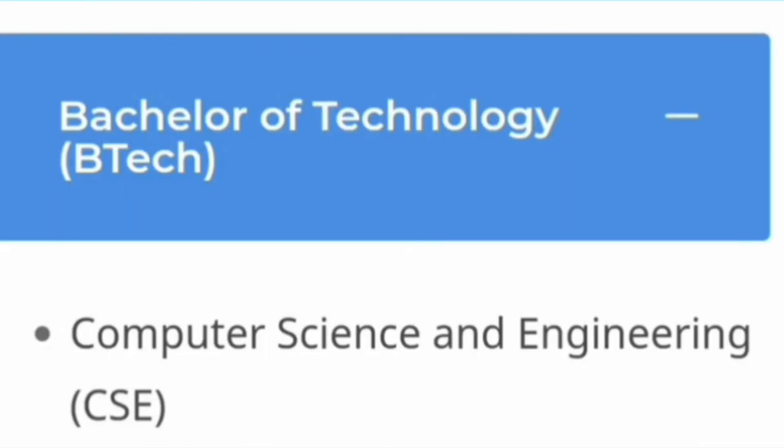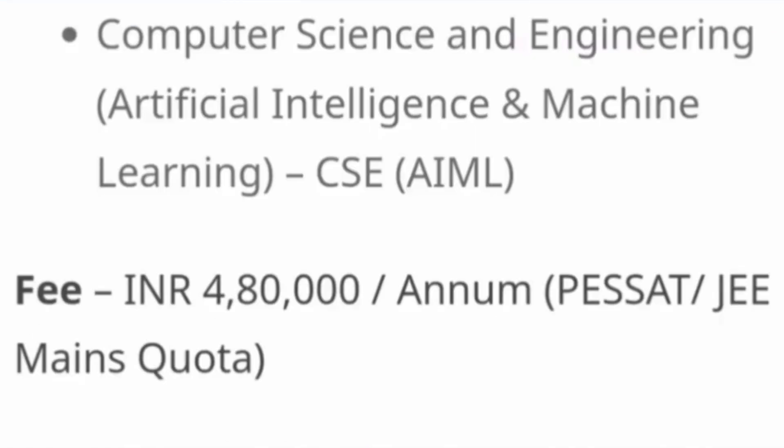Starting with the first branch: Computer Science Engineering, which is one of the most demanding branches — CSC. From the same department you also have Computer Science Engineering with AIML, i.e., CSC AIML. The fee structure is the same for both CSC and CSC AIML, which is 4 lakh 80,000 rupees per year.